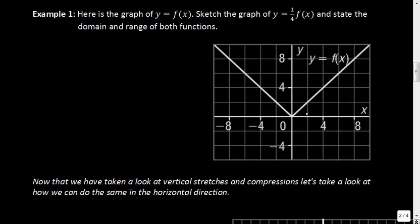So it would actually go right about here — that's where it would be approximately. This point at y = 4 would be down here at ¼ of 4, which is 1. If you're wondering why that doesn't look right, it's because these are going up by increments of 2. This one at y = 6 is a little bit tougher to do, so if you have ones like that, just do the easier ones.